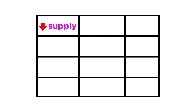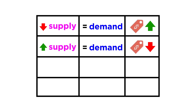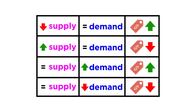If supply goes down but demand stays the same, prices go up. If supply goes up but demand stays the same, prices go down. If demand goes up but supply stays the same, prices go up. And if demand goes down but supply stays the same, prices go down.